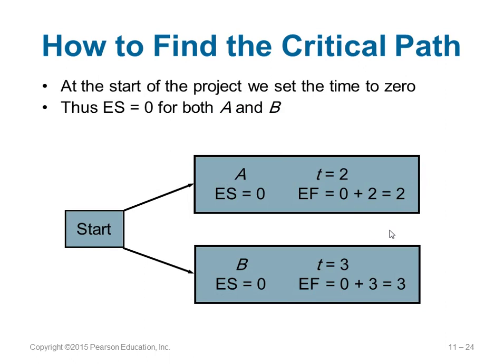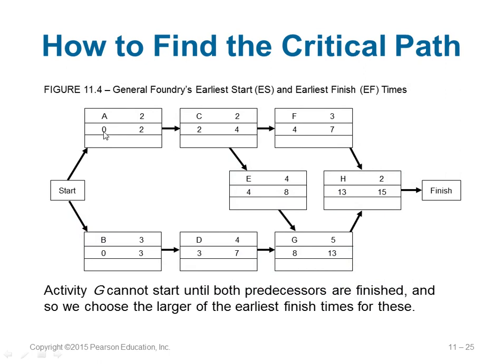For activity A, ES = 0 (no predecessor), so EF = 0 + 2 = 2. For B, ES = 0 (parallel with A), EF = 0 + 3 = 3. C's ES = 2 (from A's EF), EF = 2 + 2 = 4. Then 4 comes to E: EF of E = 4 + 4 = 8. For B: EF = 3; D's ES = 3, EF = 3 + 4 = 7. G depends on D and E: E finishes at 8, D at 7, so take the latest — ES of G = 8, EF = 8 + 5 = 13.